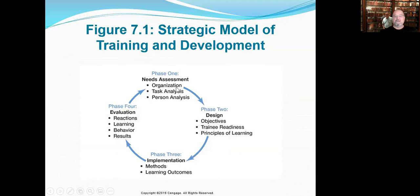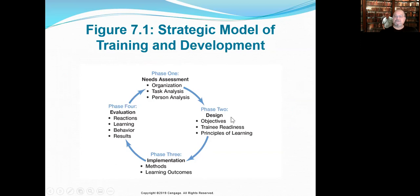Phase one is the needs assessment — what kind of training do we need? First, you have to look at your organization's mission: what are we trying to do and accomplish? Then look at the tasks that are necessary within the organization. Then look at your people — the people you don't have that you want, and the people you do have who might need specific types of training.